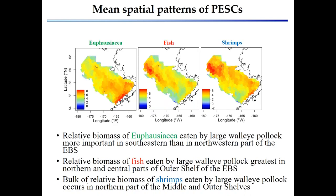We can take the average across time of consumptive removals — the product of prey proportions and predator biomass. Fish has the highest consumptive removals in the northern outer domain, shrimp throughout the middle into Bristol Bay, and euphausiids highest in the south. We can also contrast individual years, looking at the warm year of 2003 versus the colder year of 2015, showing a contrasting landscape of predation for this major predator.